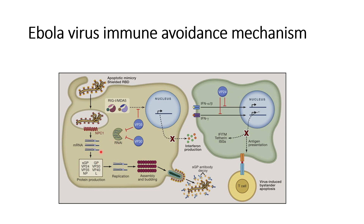VP30 and VP35 prevent the gene silencing of the cells, which is usually initiated whenever the cell is in an abnormal condition — such as when the virus starts to take over the host machinery. In this case, VP30 and VP35 prevent RNAi from carrying out gene silencing.